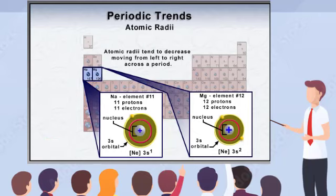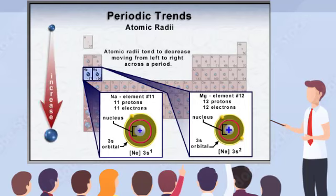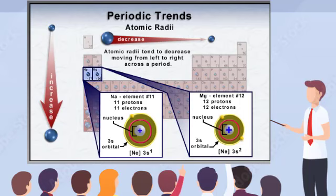To recap the trends in atomic radii: atoms generally become bigger as you move down the periodic table, and they become smaller as you move across the periodic table from left to right. You'll notice that the largest atoms tend to be in the lower left of the table, and the smallest atoms are in the upper right.